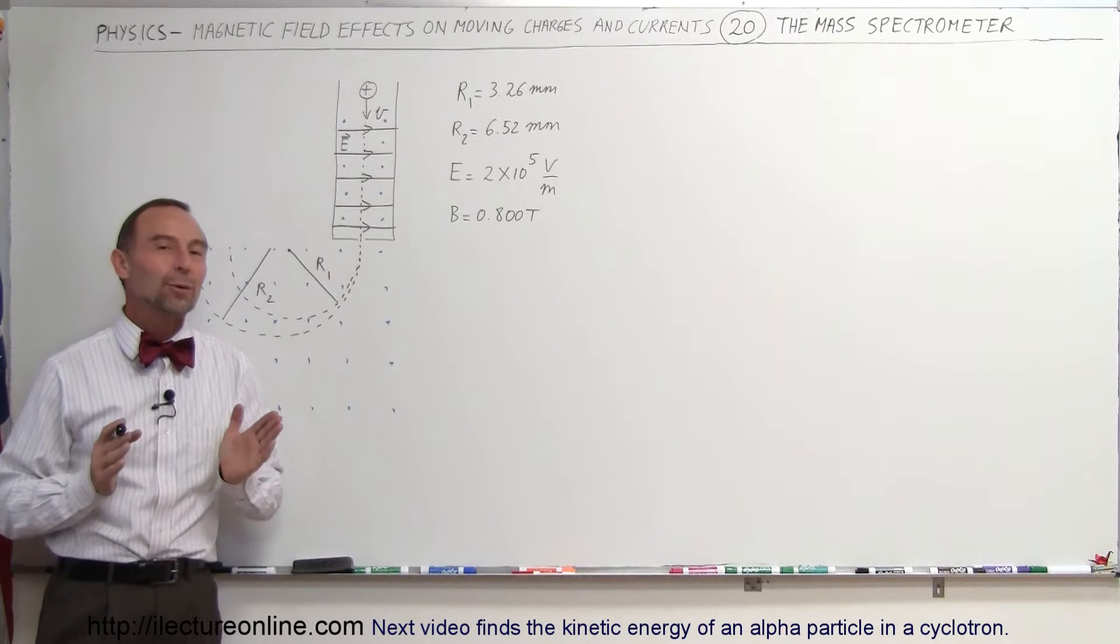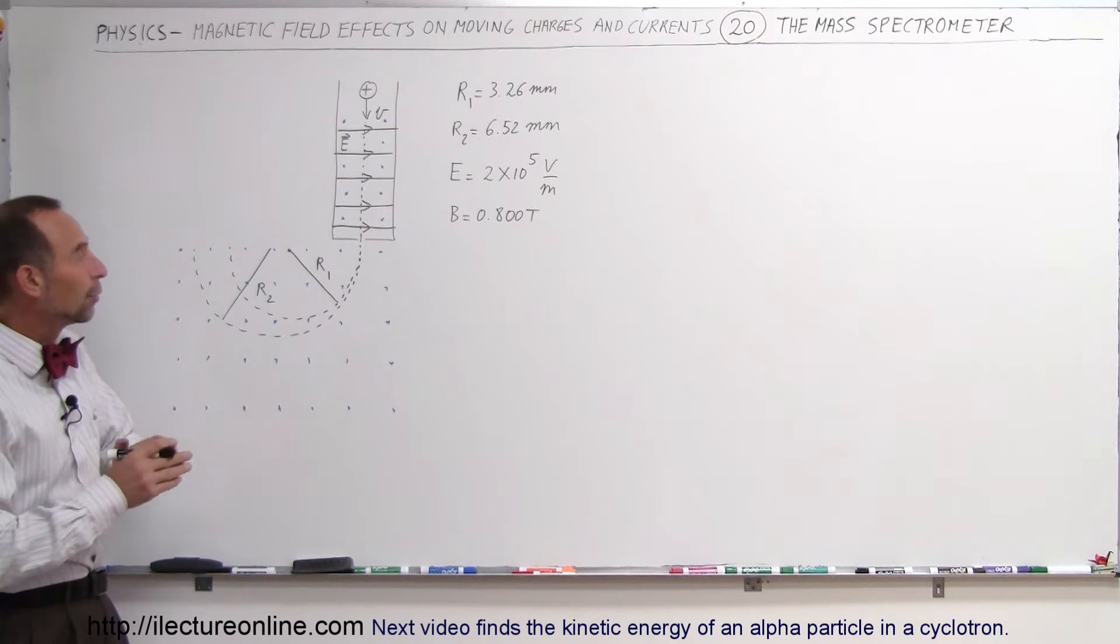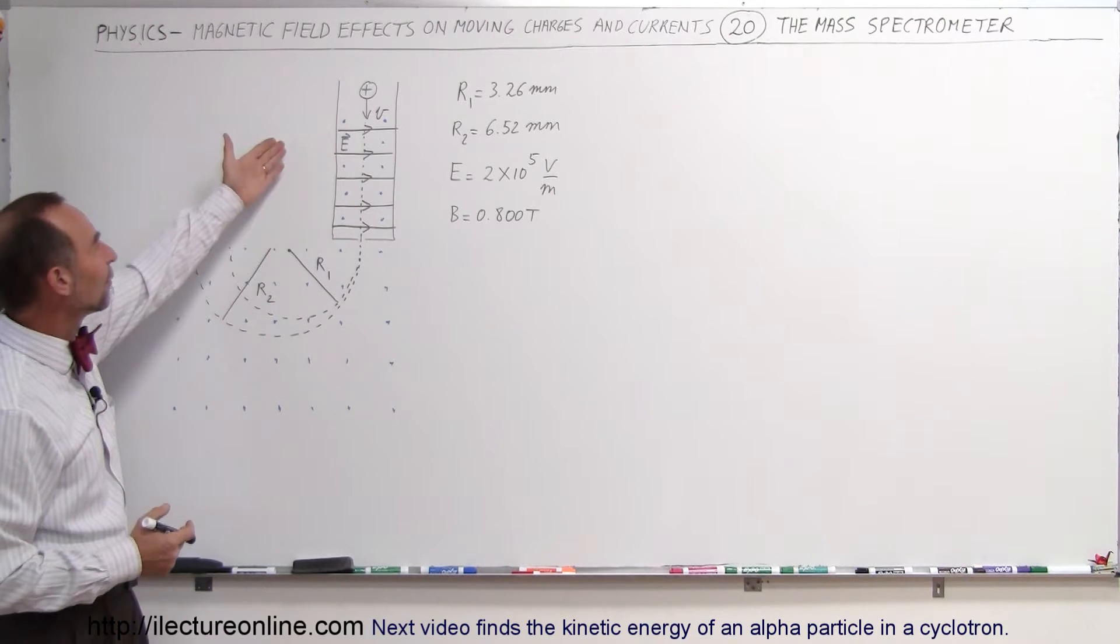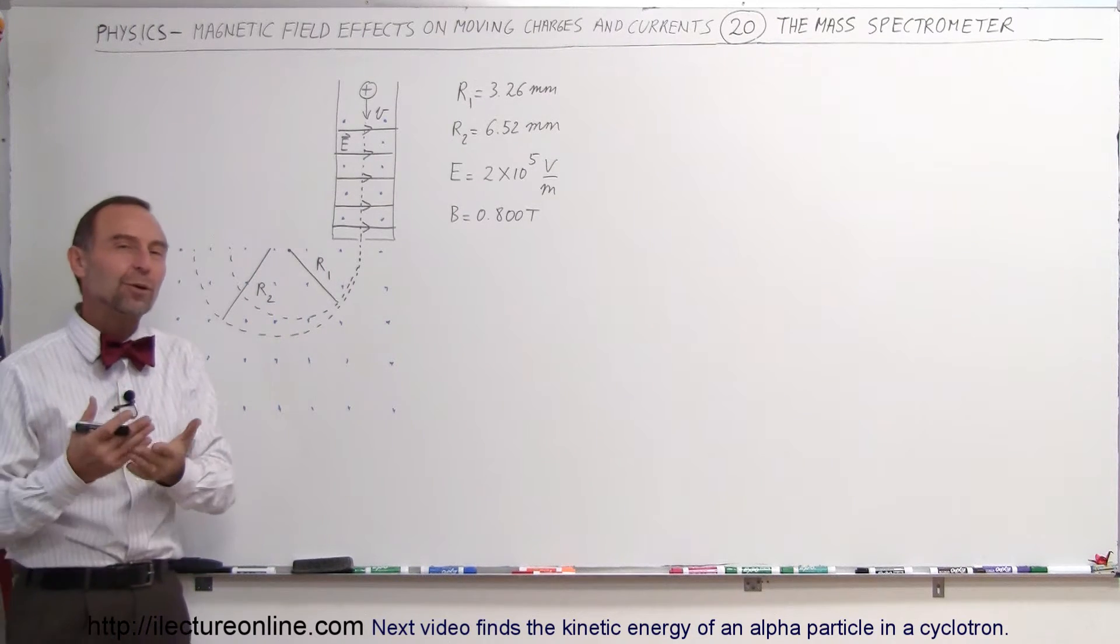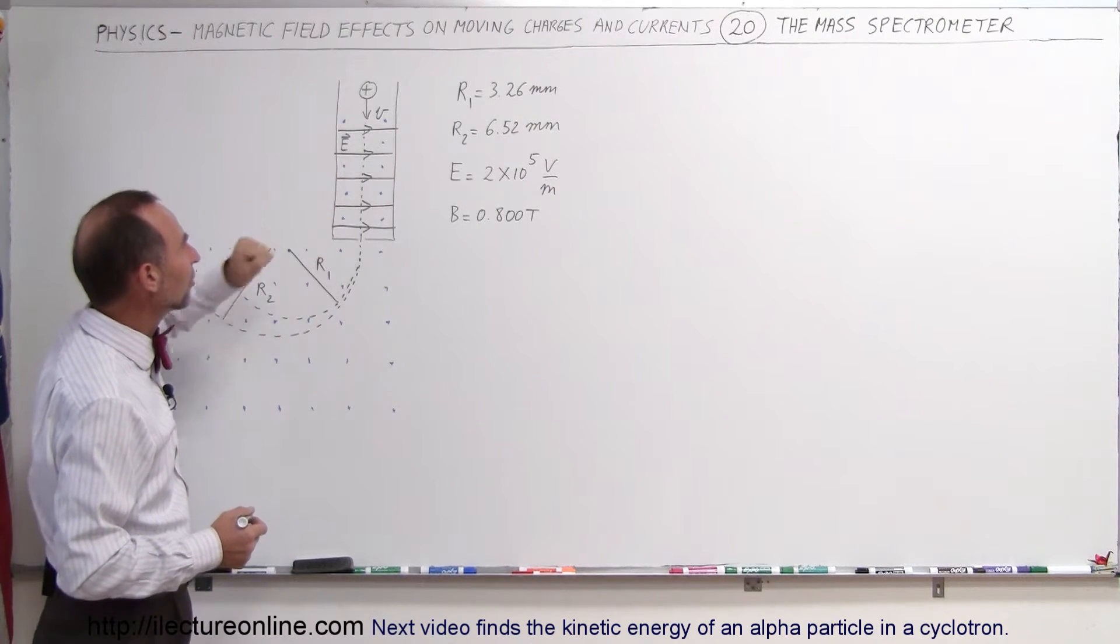Welcome to ElectronLine and now we're going to talk about mass spectrometers. Well, first of all, in order to build a mass spectrometer you have to have a velocity selector and we already have a video on how to calculate the velocity of a particle coming through a velocity selector.